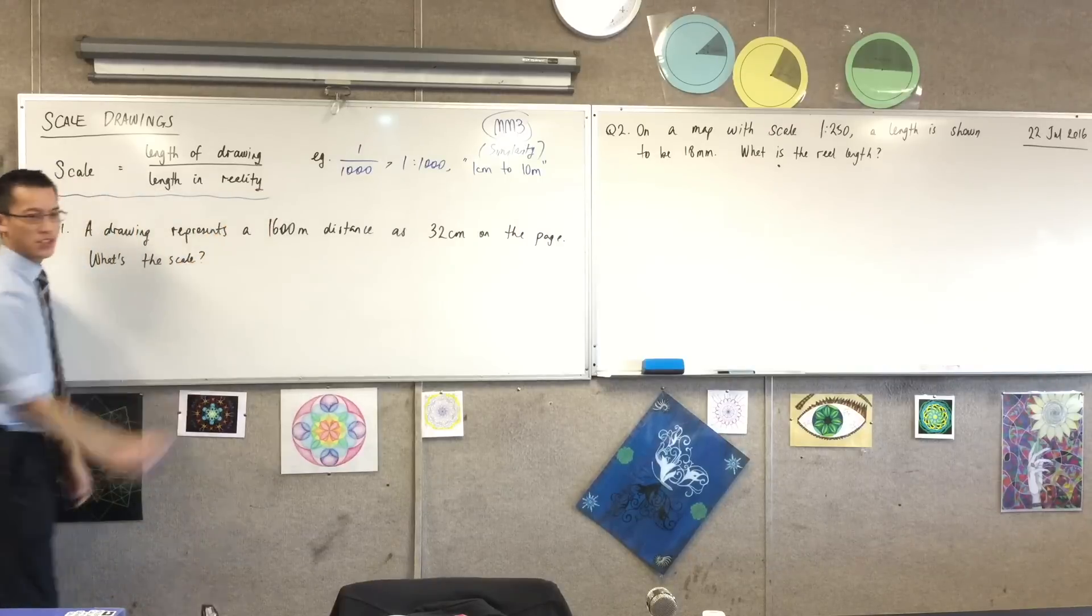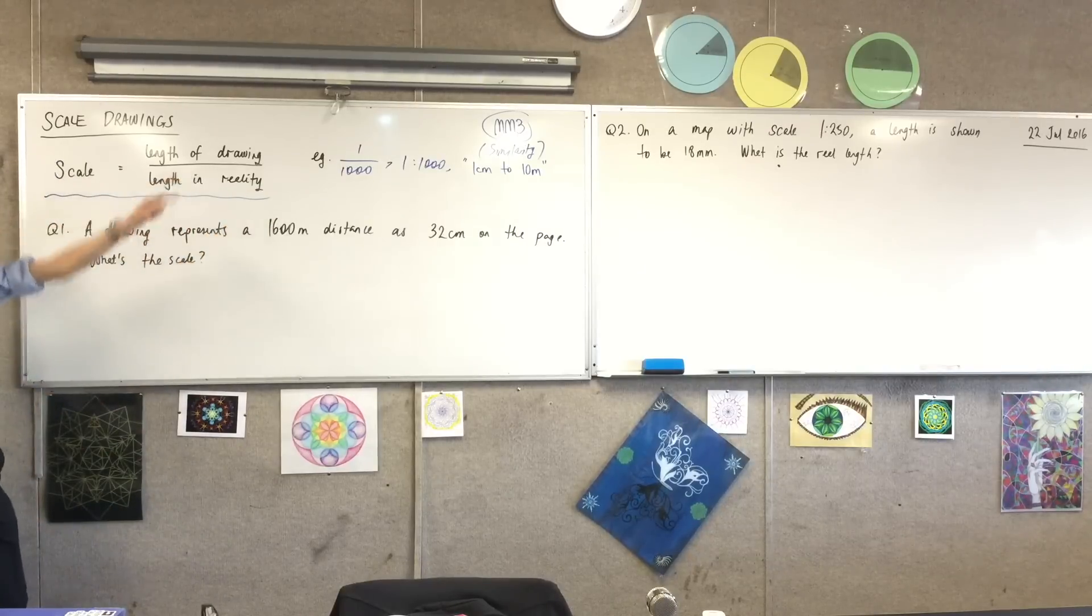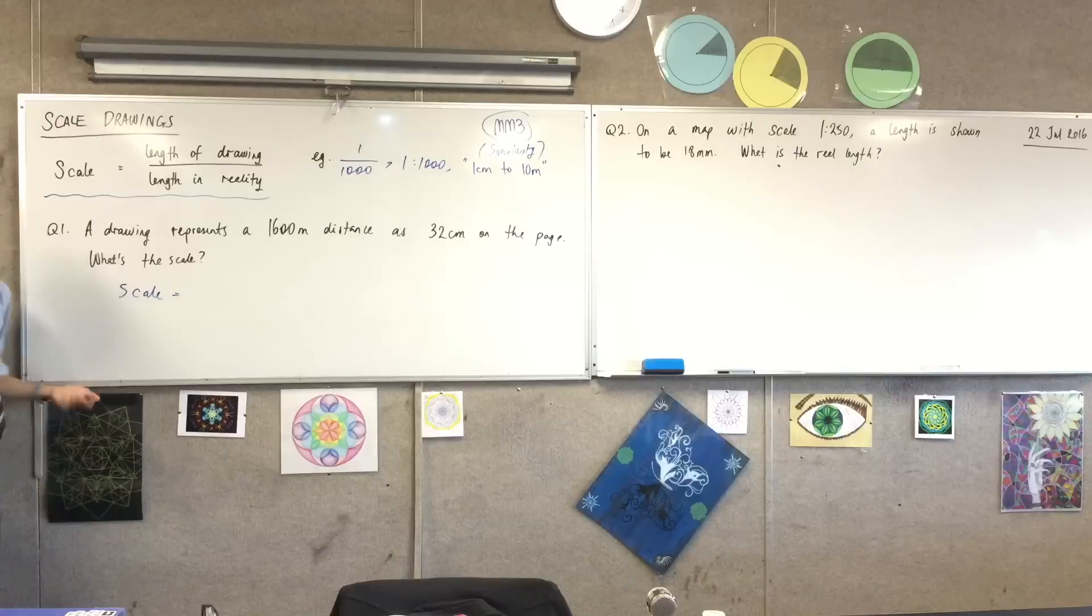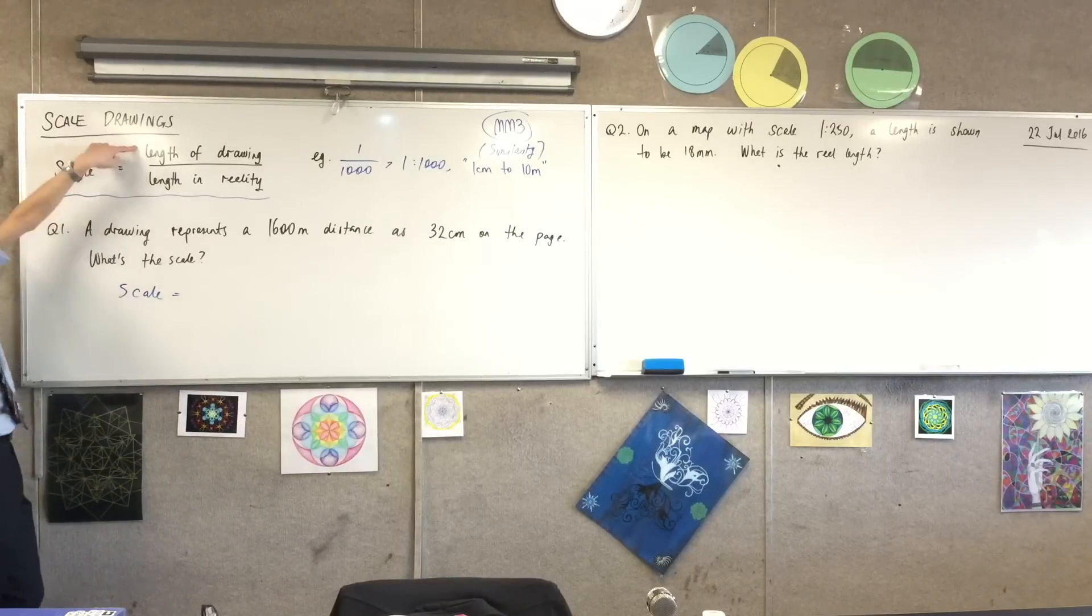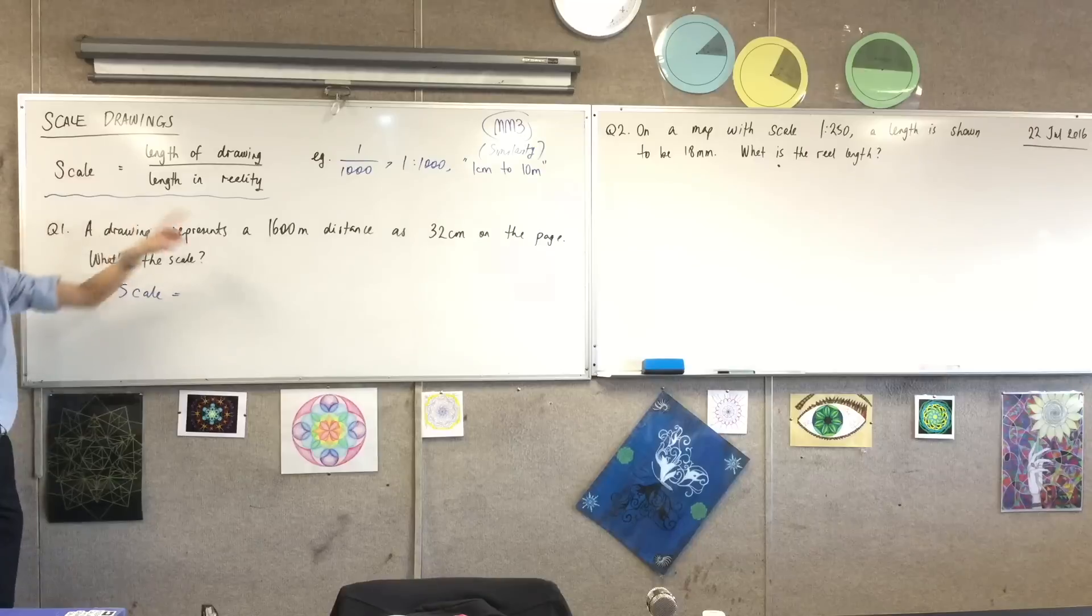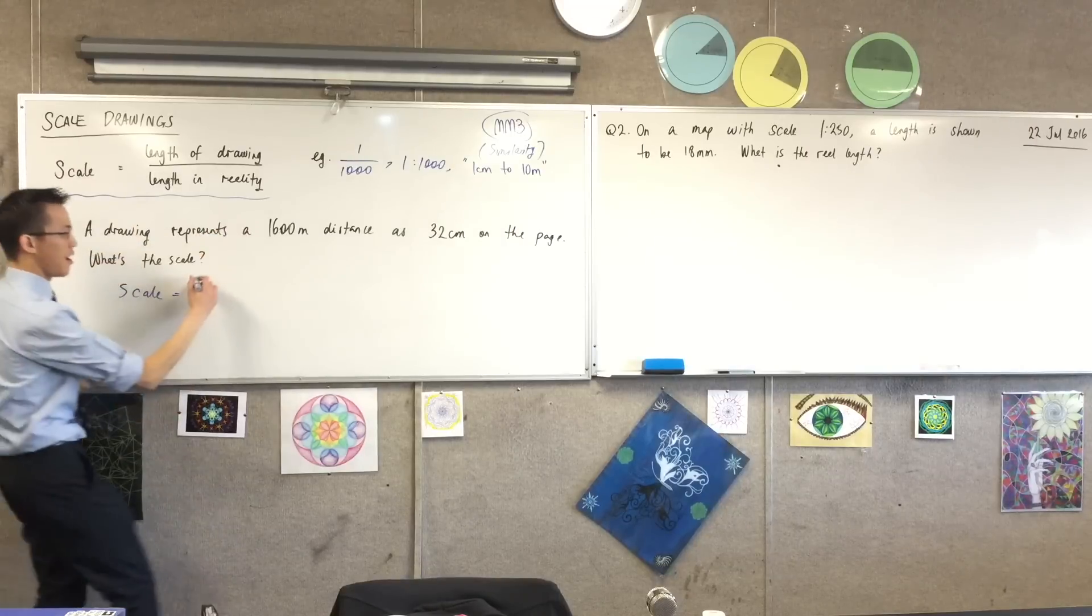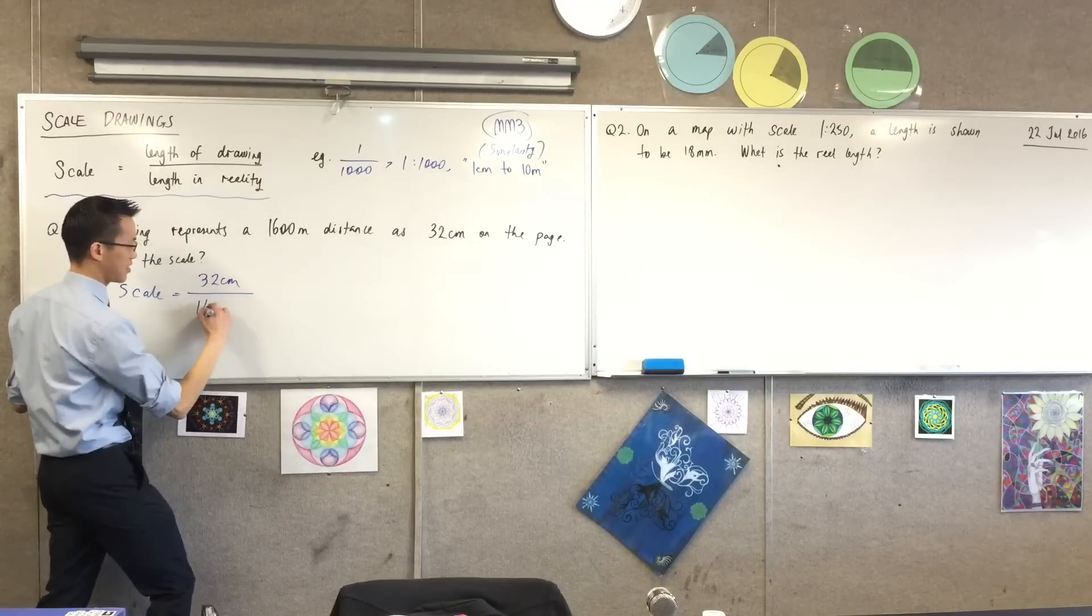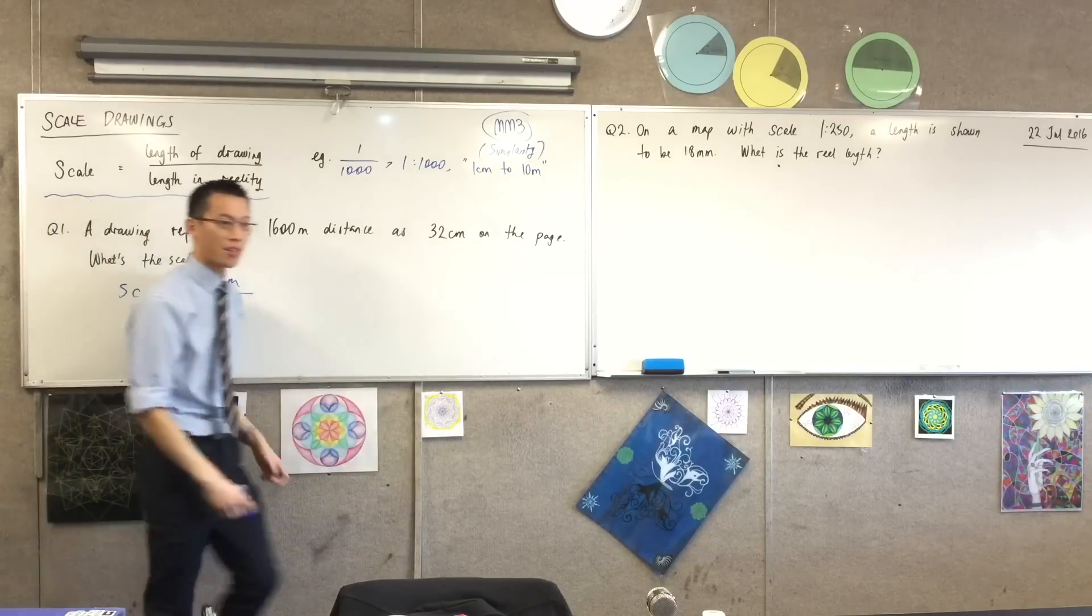How do we work out the scale? Well, come back to this guy. This is just our simple definition for how to get the right ratio. I'm going to write down scale equals, and then I'm going to put down the small length on the top, big length on the bottom. The drawing versus reality. So here you can see which is which. I'm going to have 32 centimeters on the top and sixteen hundred meters on the bottom.